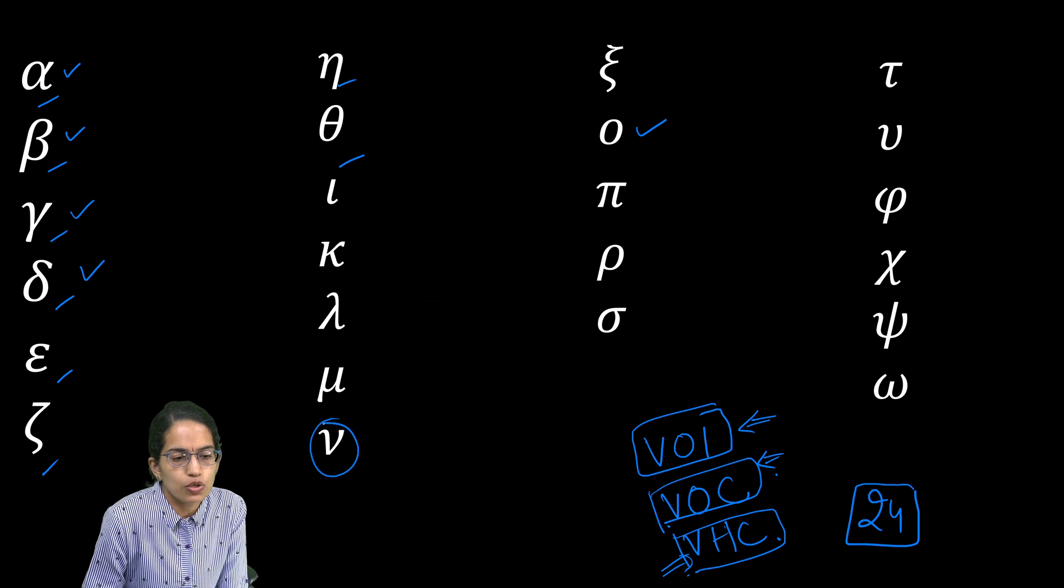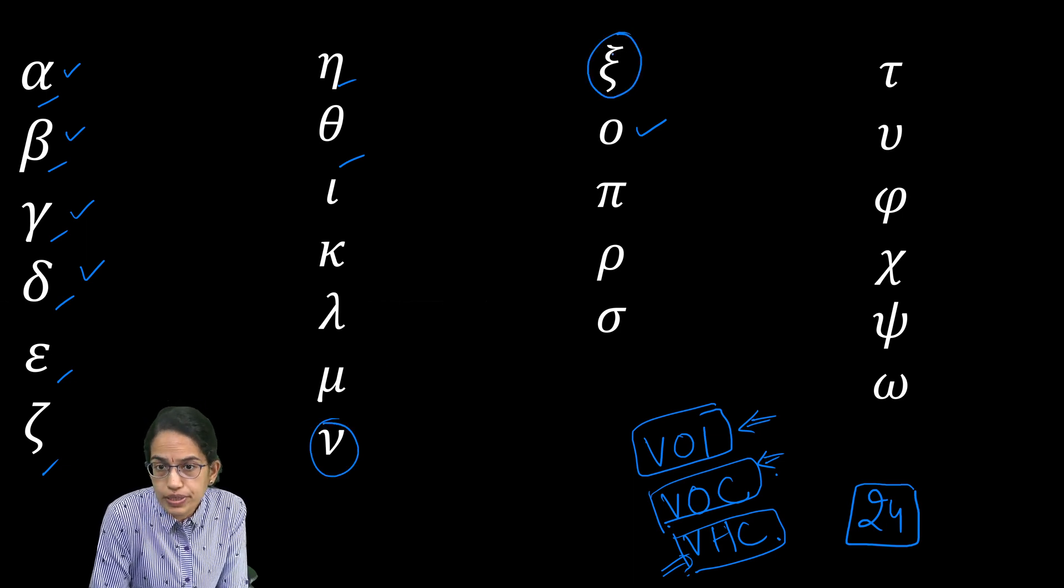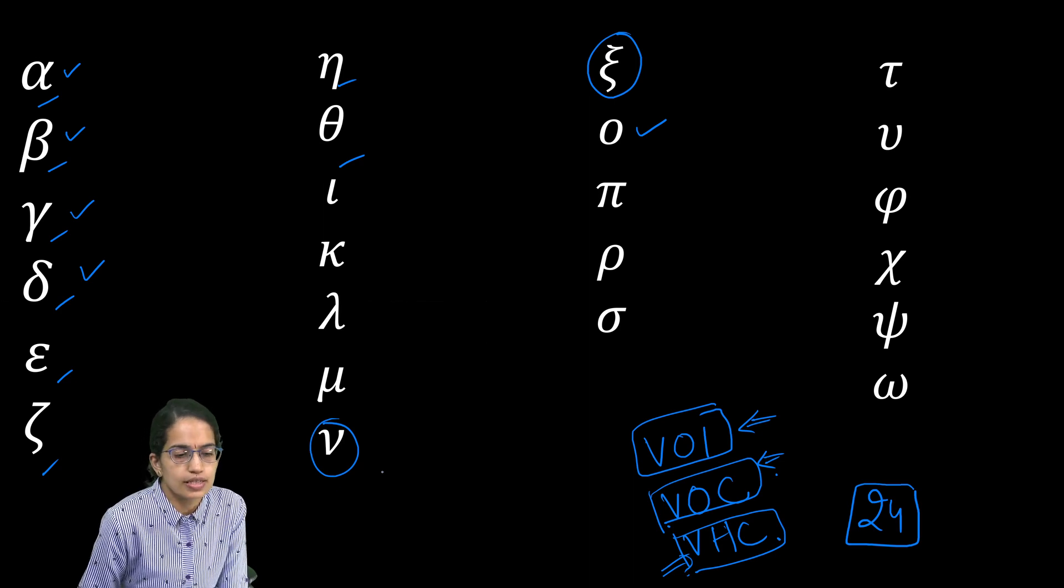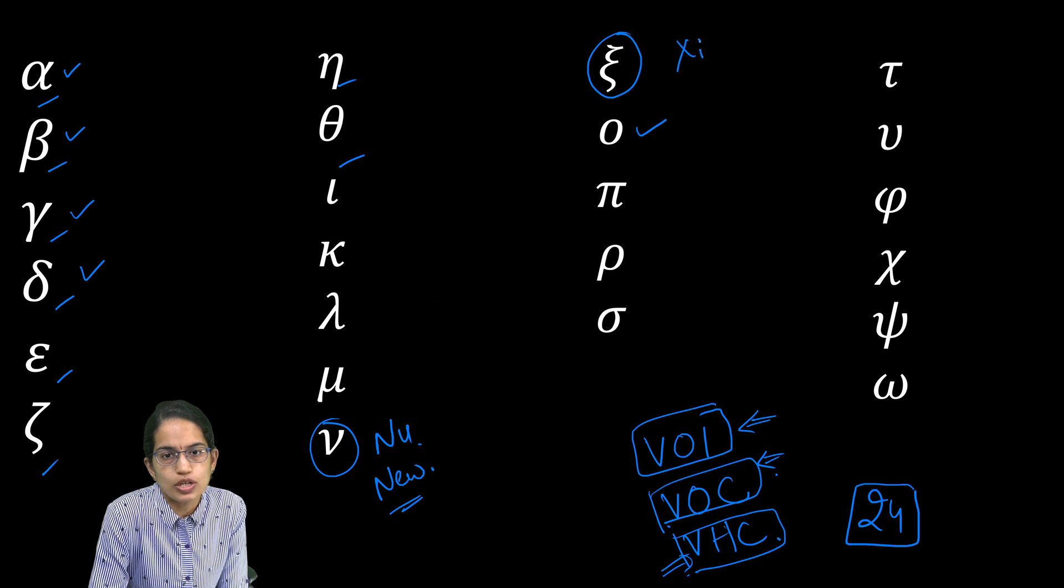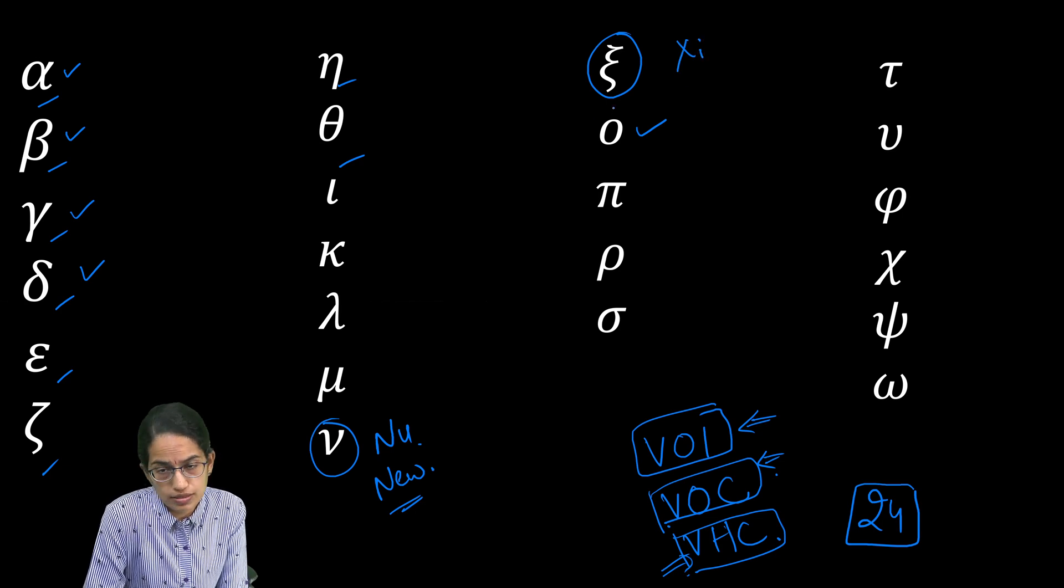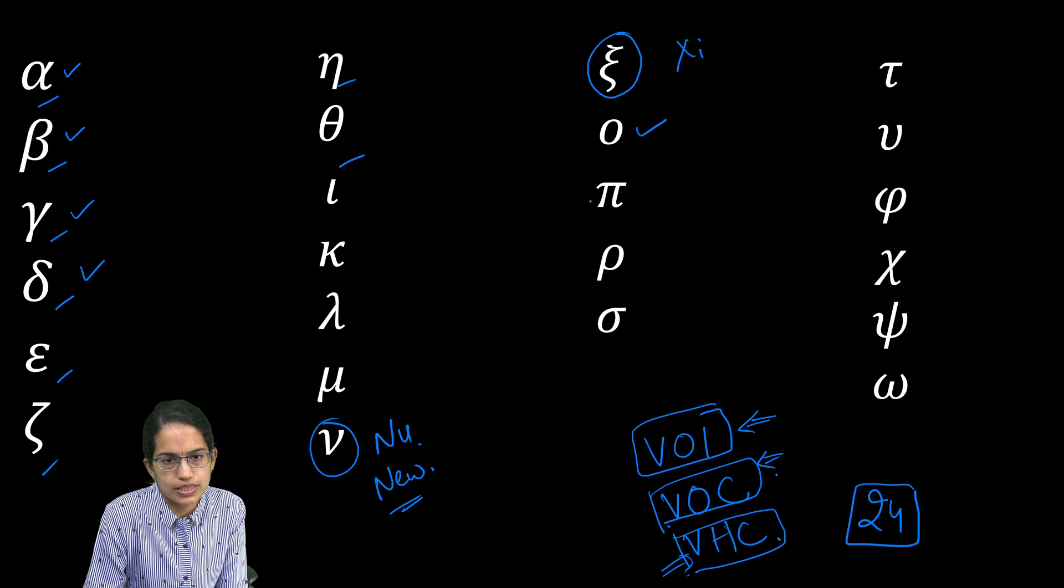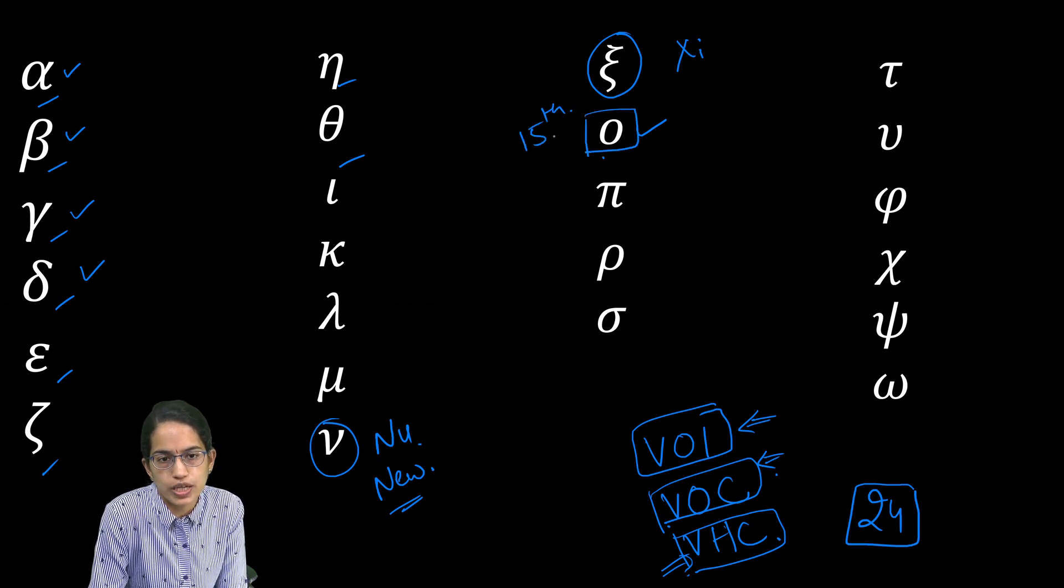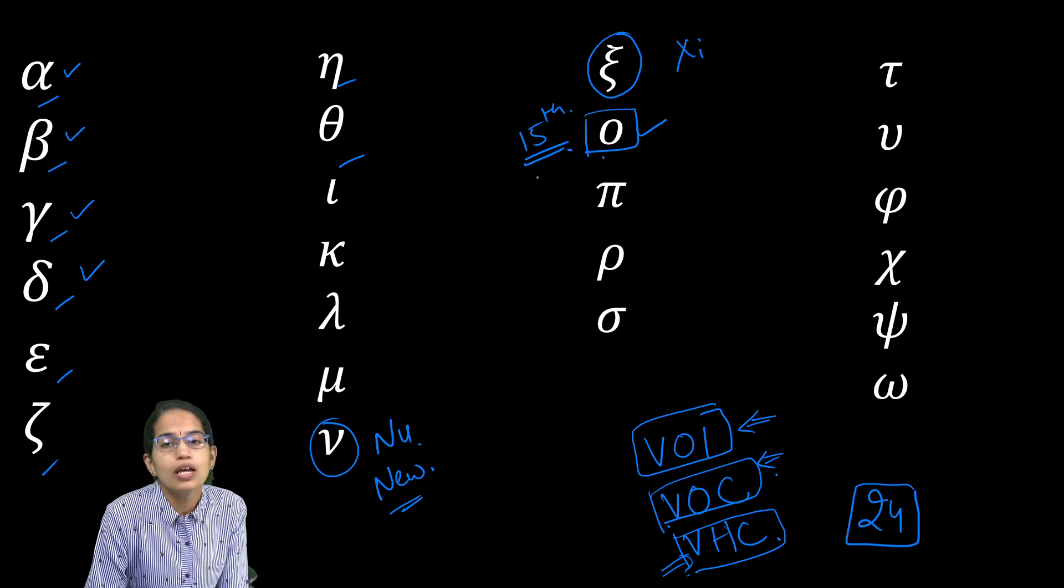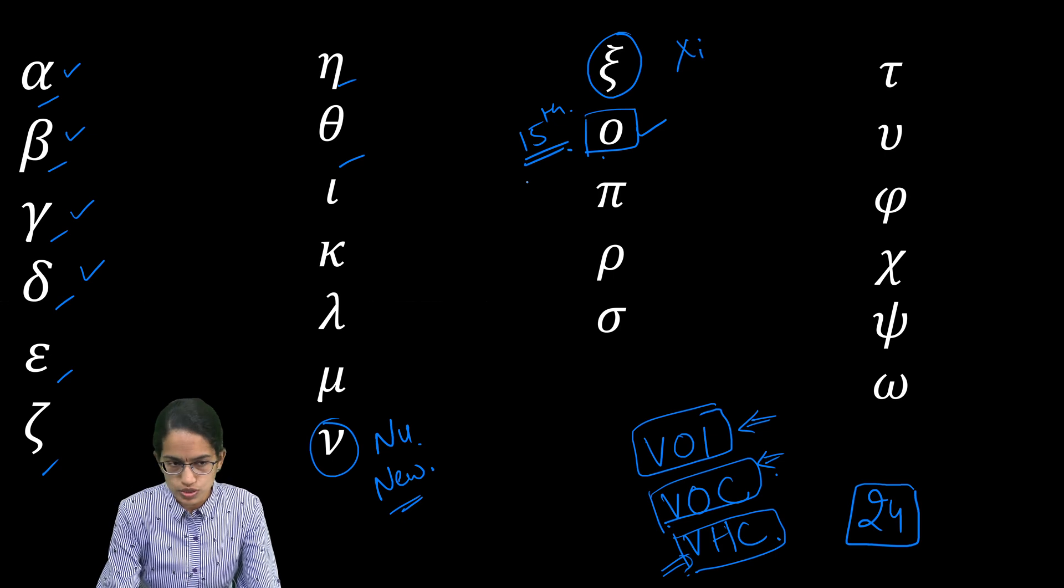Then we have nu and xi, which have not been included in the COVID variant naming so far. The reason for not including nu is it is similar to the English word new and therefore confusing. And xi is not included because of Xi Jinping, who is a premier from China. So just to avoid those controversies, these two Greek alphabets have been avoided. And then the jump has been on the 15th variant, the 15th letter, which is omicron and which is the recent variant that is in news these days.